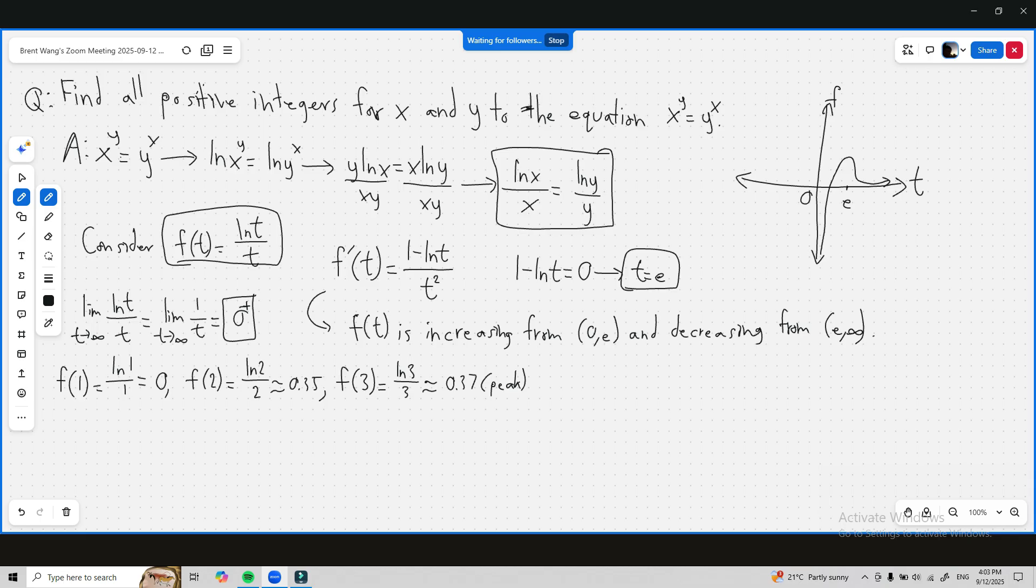Now f of 4 is equal to ln 4 over 4, but ln 4 is 2 squared so that's ln 2 squared which is 2 ln 2 over 4, which is just ln 2 over 2. So f of 2 and f of 4 are the same.